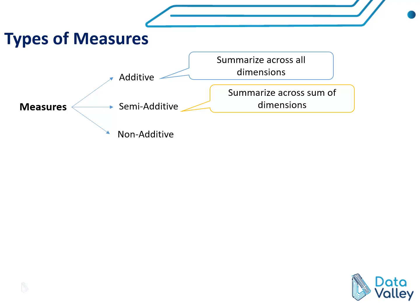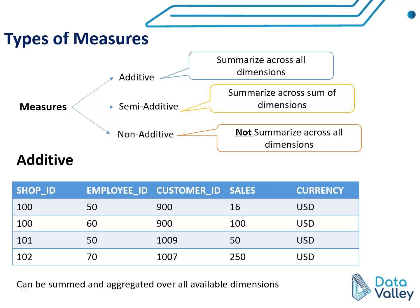For semi-additive measures, we can aggregate over certain dimension columns, but not all dimensions available in the fact table. For non-additive measures, we cannot summarize or aggregate across any of the available dimensions in the fact table.